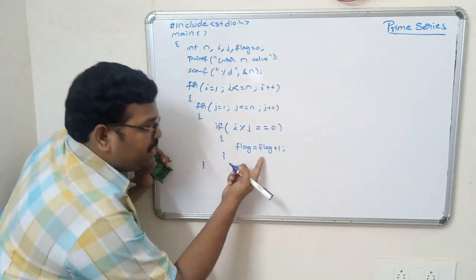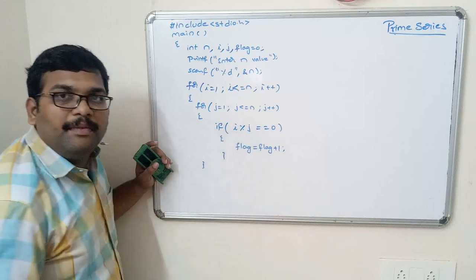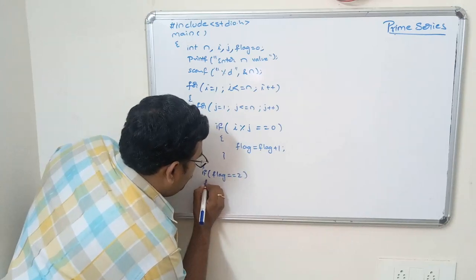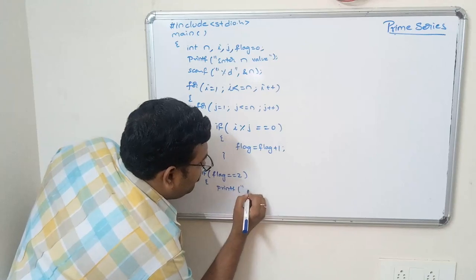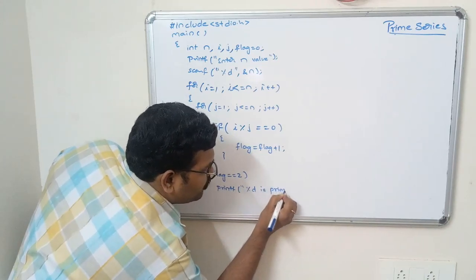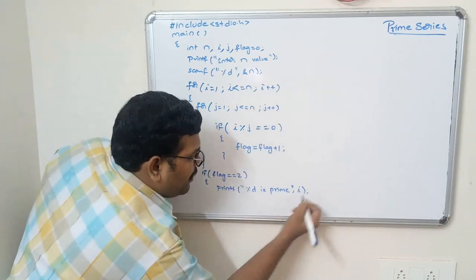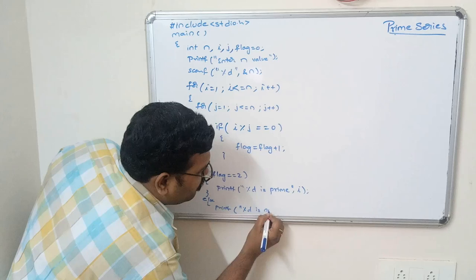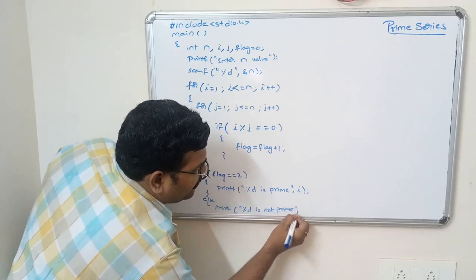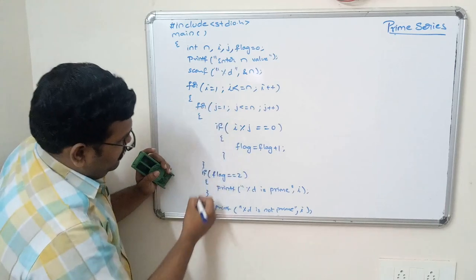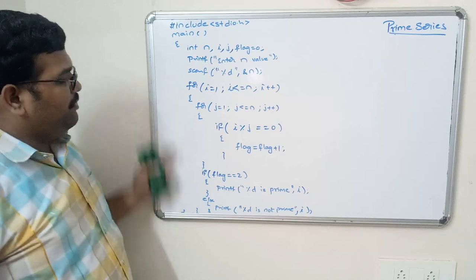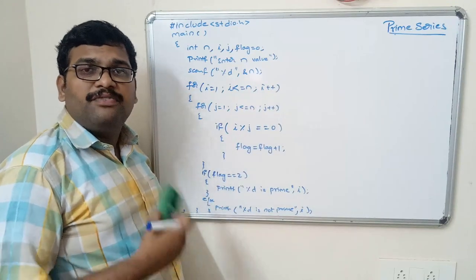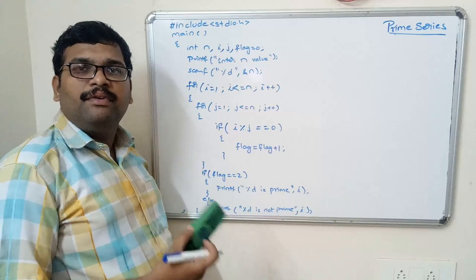After closing the inner loop, we check: if flag equals 2, then printf that i is prime. Else, printf that i is not prime. Then close the outer loop and close the main function. This is the complete program for finding the prime series — that means finding all prime numbers in between 1 and n.